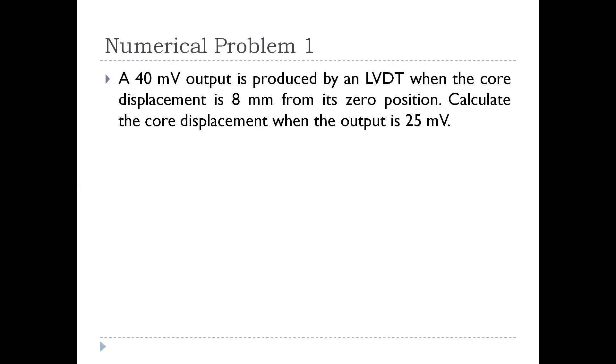Sensitivity is given by output by input, that is change in output by change in input. Here the output is changing from 0 to 40mV and the input is changing from zero position to 8mm. Since both charge from zero, we can write it as output voltage by displacement. So we will be getting 40 by 8 that is 5mV per mm.